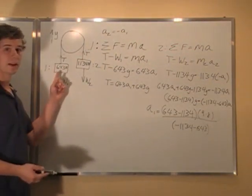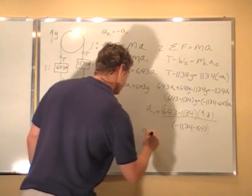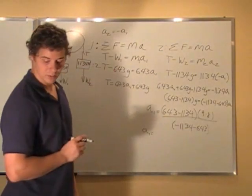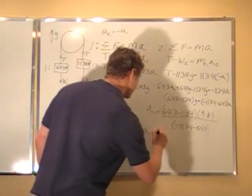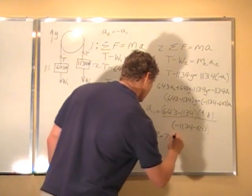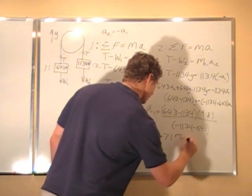Which we have defined it as. So that turned out to be correct. And a1 turns out to be 2.71 meters per second squared.